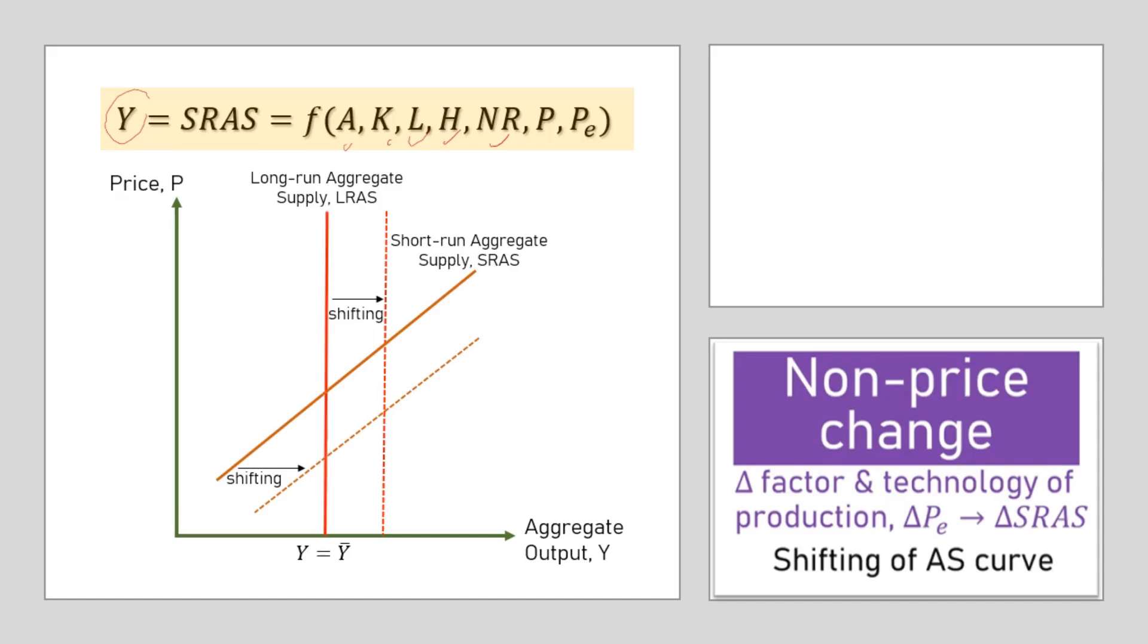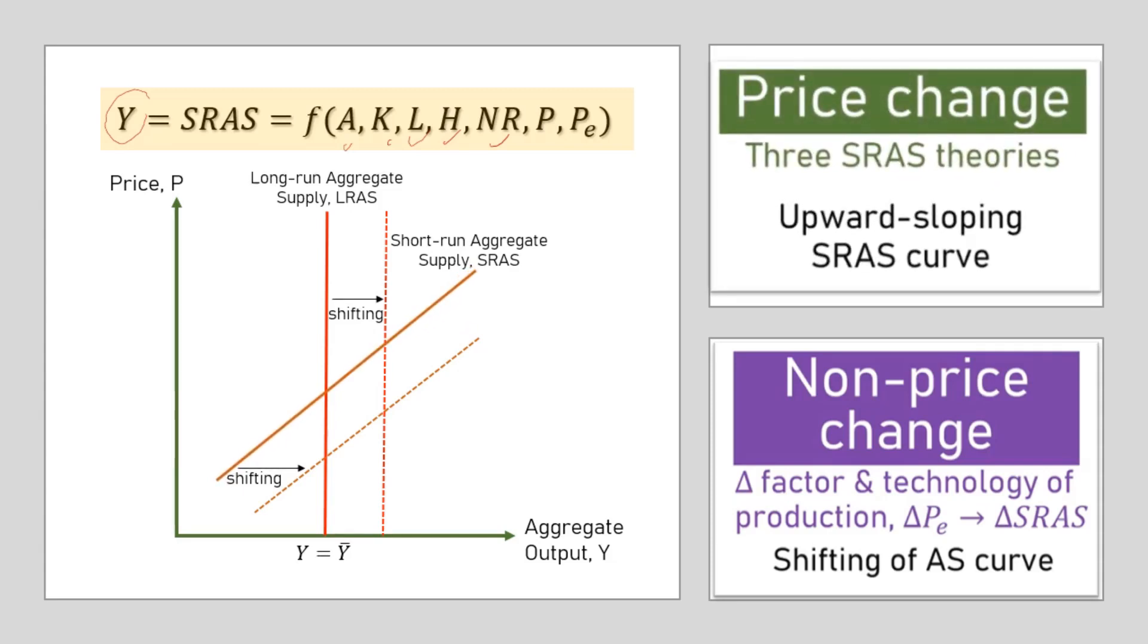In the short run, the situation is a little bit different. Aggregate price or P does affect the AS curve. Production somehow will increase following the increase in price. Short run AS curve then becomes upward sloping like this. We'll soon talk about the three macroeconomic theories explaining this.